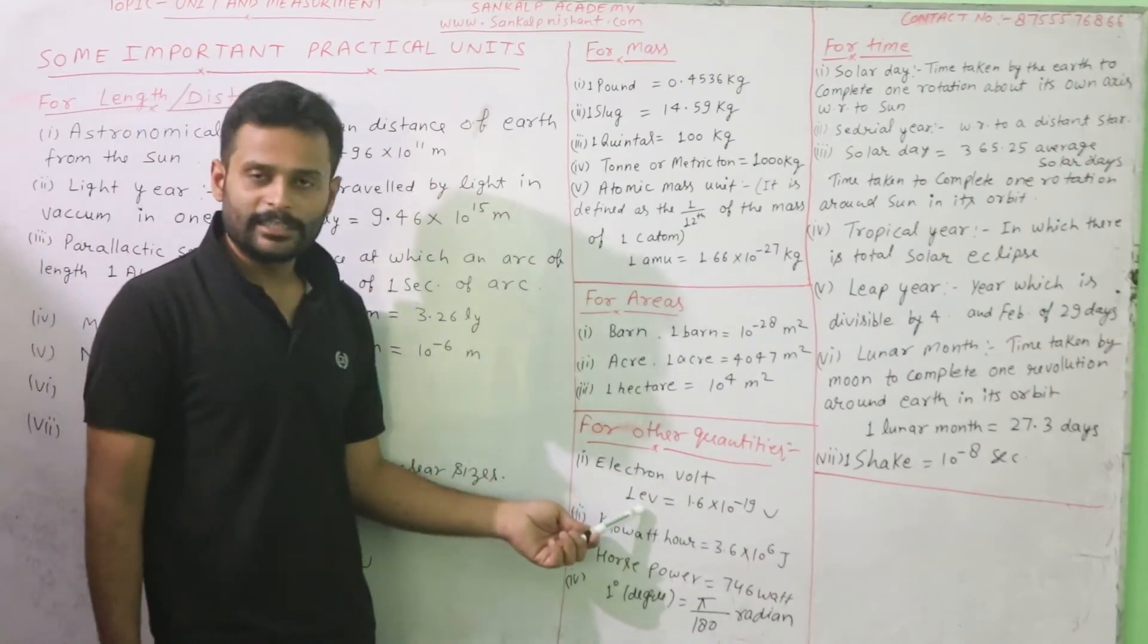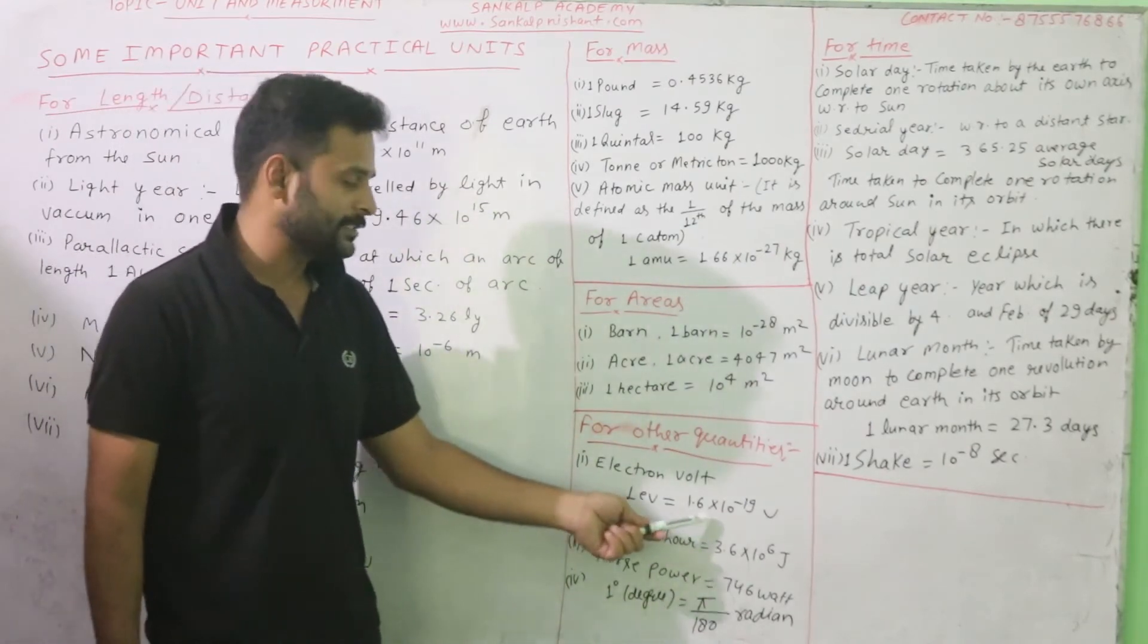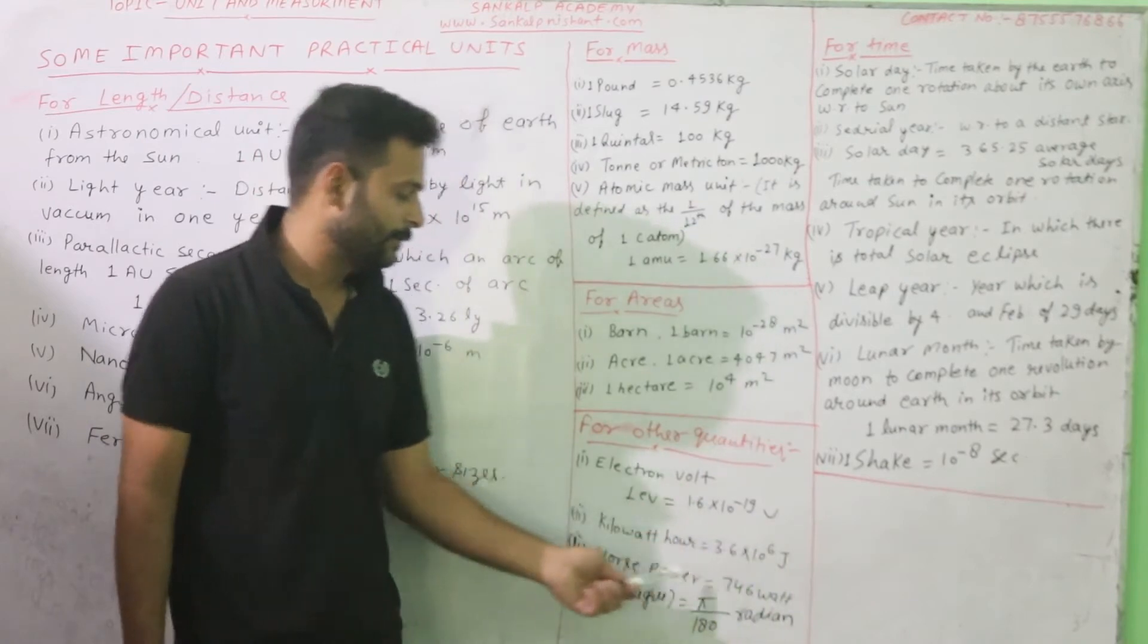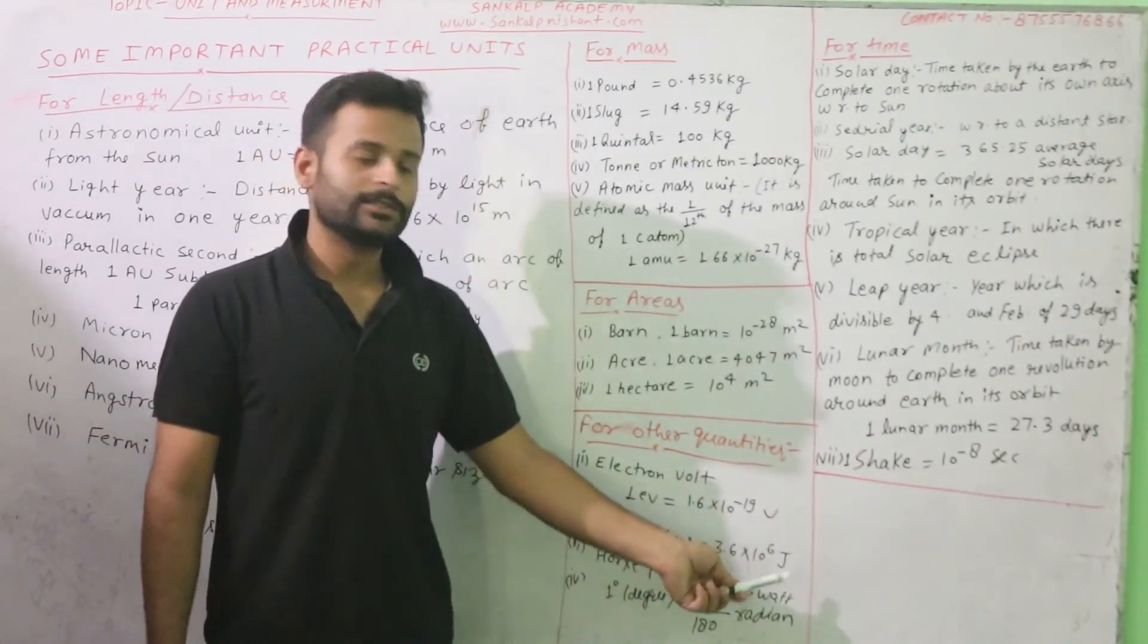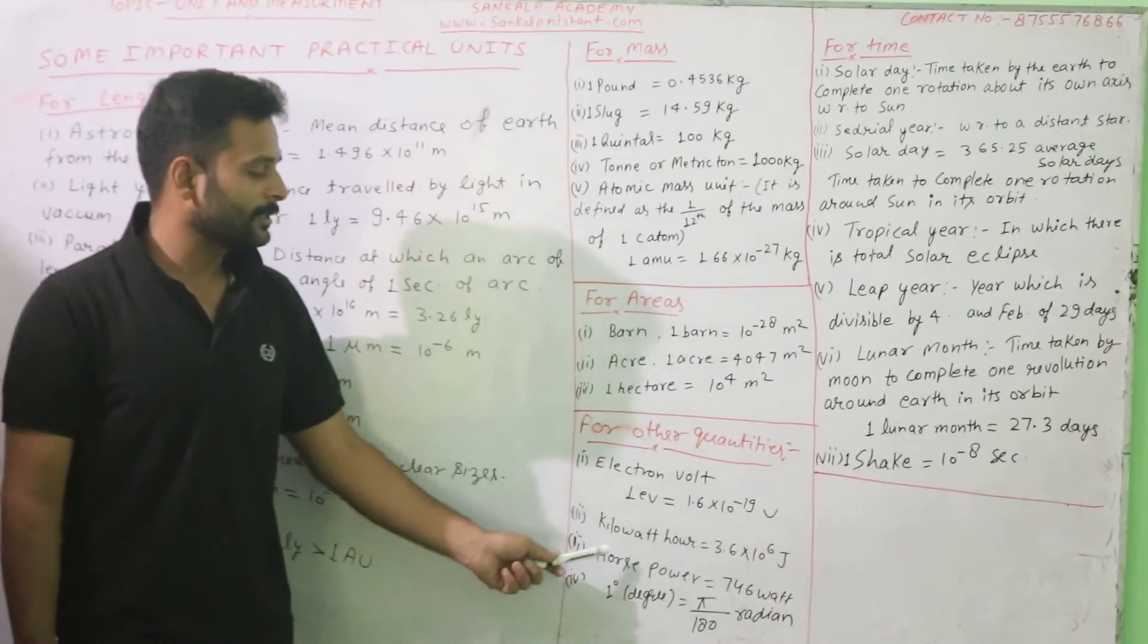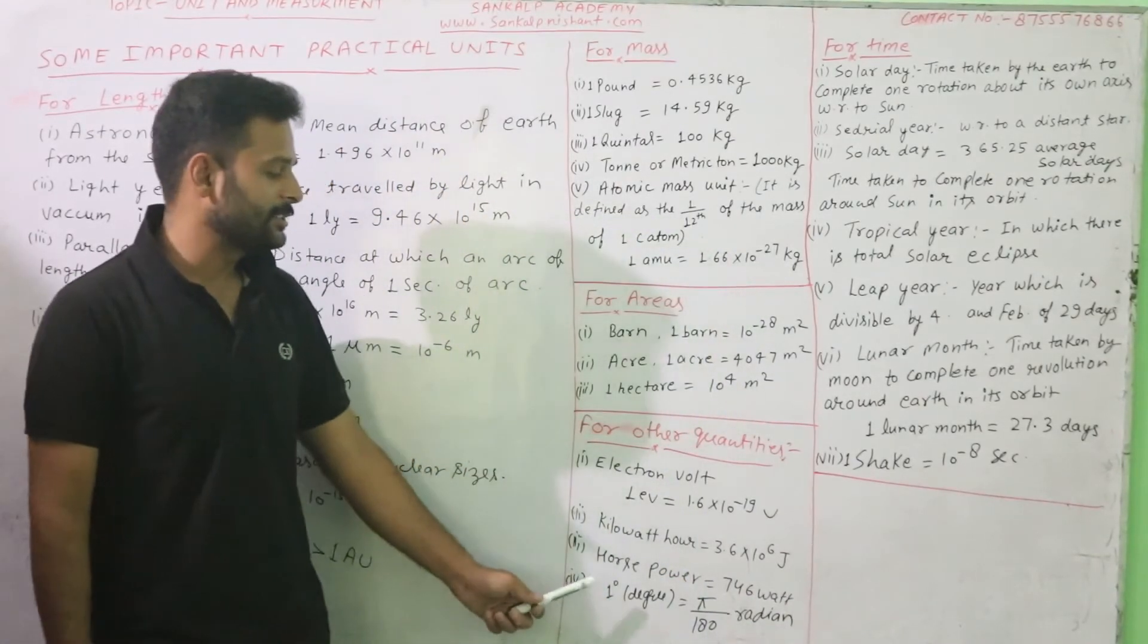Electron volt. One eV is equal to 1.6 into 10 to the minus 19 joules.